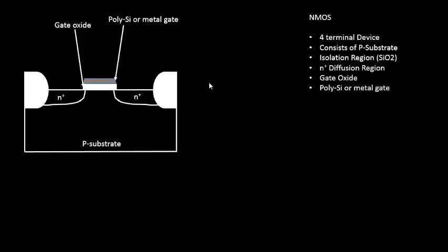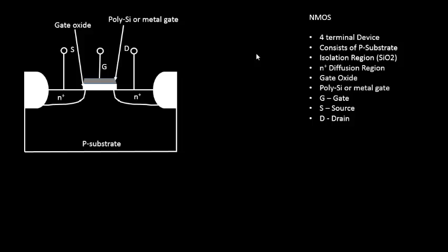Now let us build the terminals. This terminal is called the gate, this one is the source, and this one is the drain. Usually when you draw a transistor on paper you see only three terminals, but in reality there is a fourth terminal called the body, which is present here. This terminal affects the electrical characteristics of the MOSFET, and we will be looking into how it does so. In the next video, we will connect the source, gate, and drain to some potentials and look into the electrical behavior of this MOSFET.